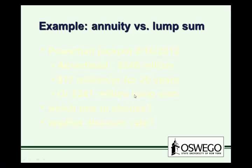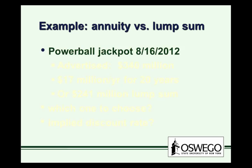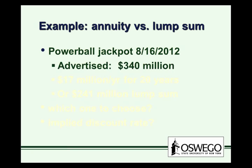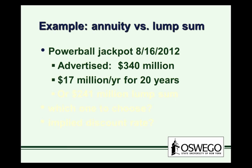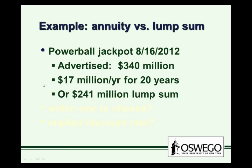Let's look at a different IRR example: the choice between an annuity and a lump sum — a series of annual cash flows versus a lump sum today. One of the best examples is the lottery. The Powerball jackpot back in August 2012 was advertised at $340 million. But what you'd actually get is either $17 million a year for 20 years — a nominal value of $340 million paid over 20 years — or if you take the lump sum, that particular date it was offered as $241 million up front.